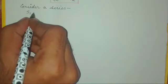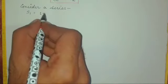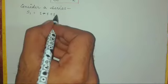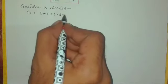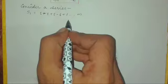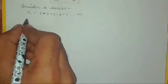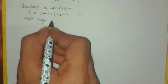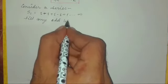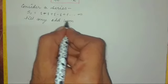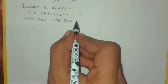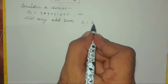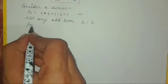To prove that, consider our series S1 that is equal to 1 minus 1 plus 1 minus 1 till infinity. If we add them, there are two possibilities: either the sum would be zero if the number of ones in this series is even, or if it is odd we will get 1.